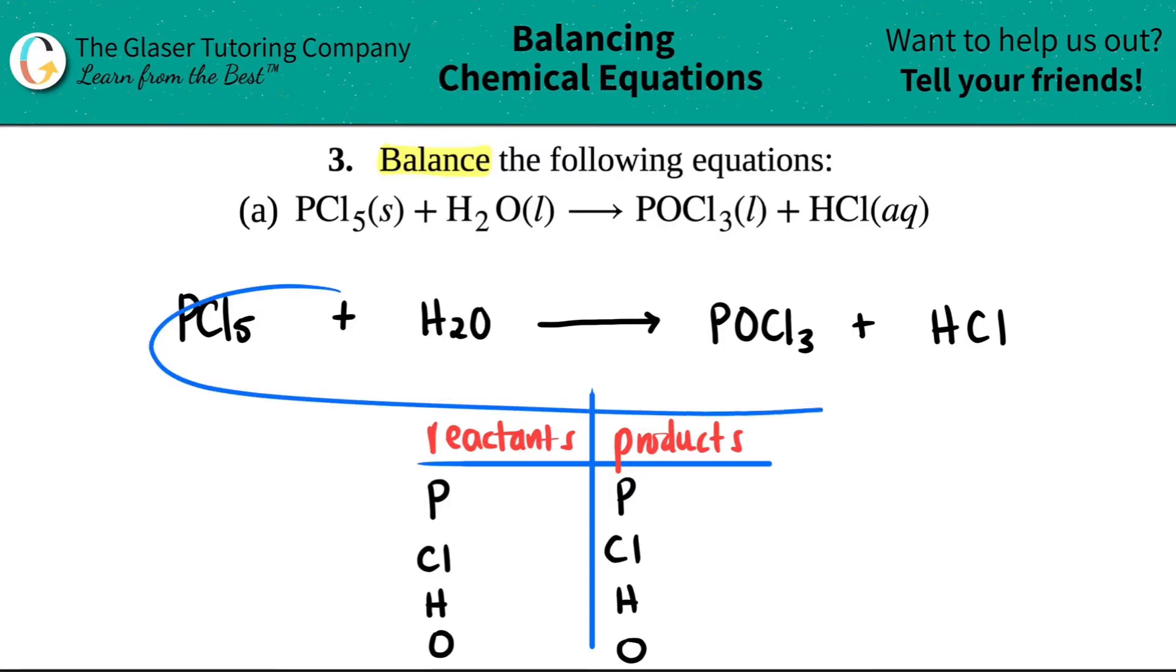Now we're going to go back to the equation and mark down how many I have of each. Let's work on the reactant side first. I had one phosphorus—there's a secret one here. I have five chlorines, and this five only goes to chlorine, not to phosphorus. I have two hydrogen and one oxygen.